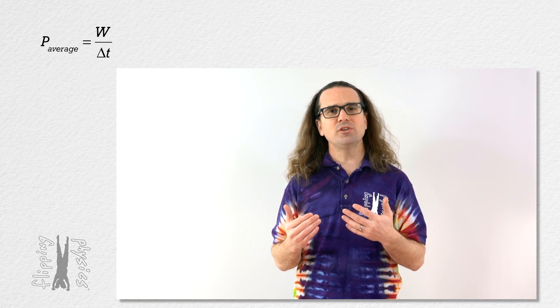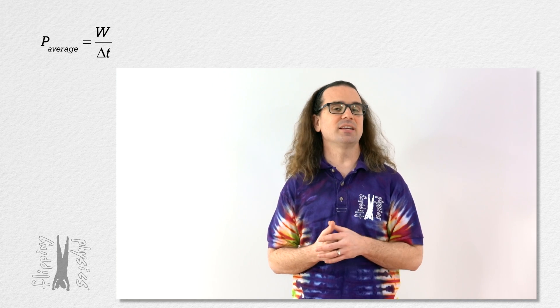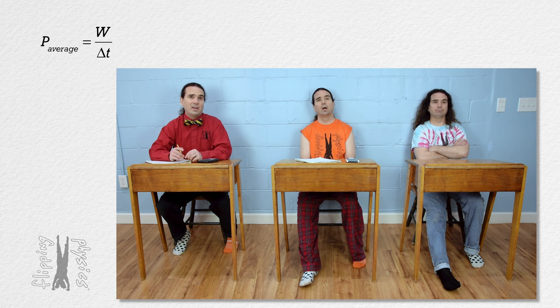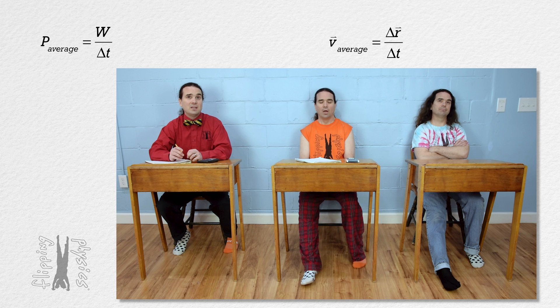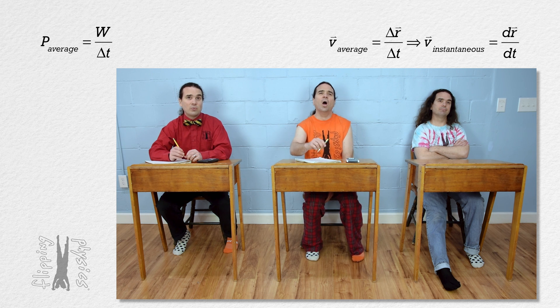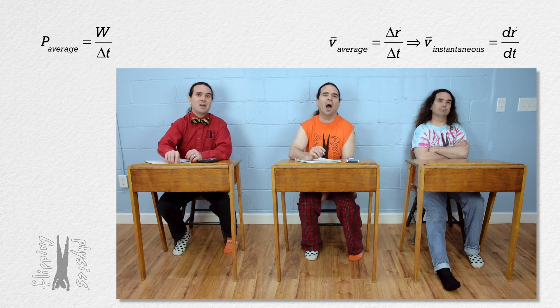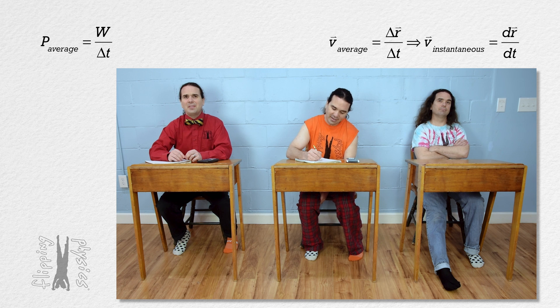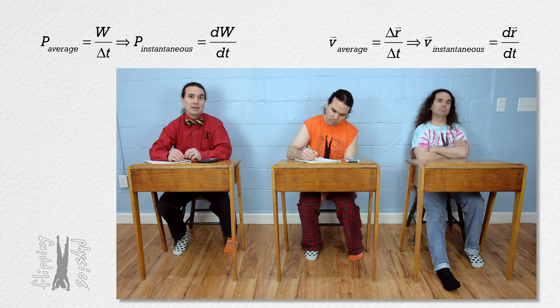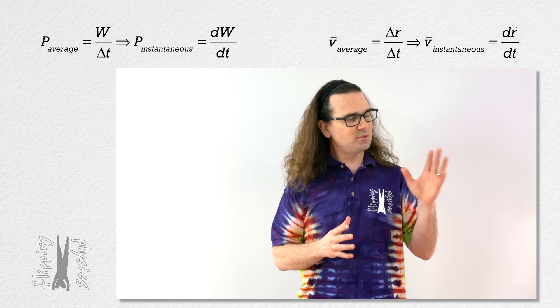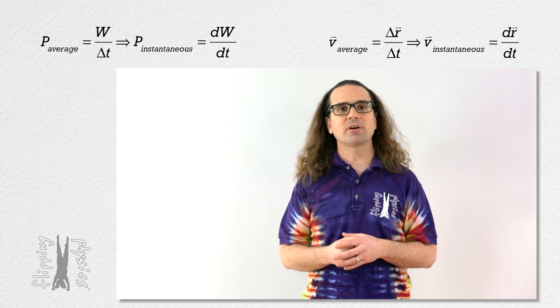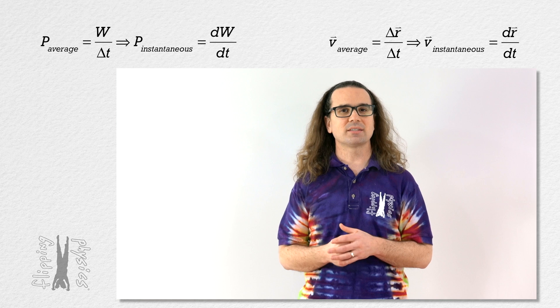Billy, what do you think the equation for instantaneous power is? Well, average velocity equals change in position over change in time, and instantaneous velocity equals the derivative of position with respect to time. So I think instantaneous power equals the derivative of work with respect to time. Right, Mr. B? Absolutely, Billy. Instantaneous power equals the derivative of work with respect to time.